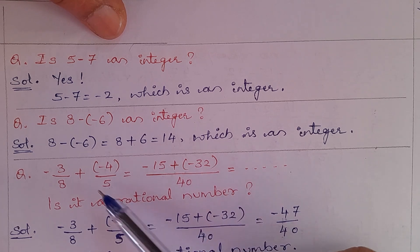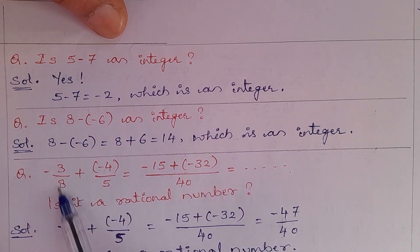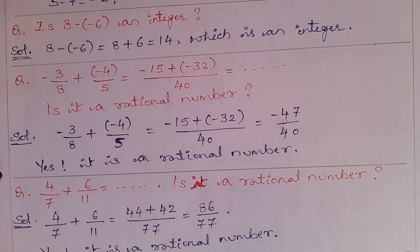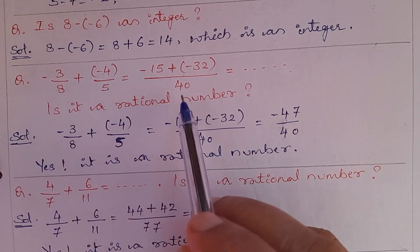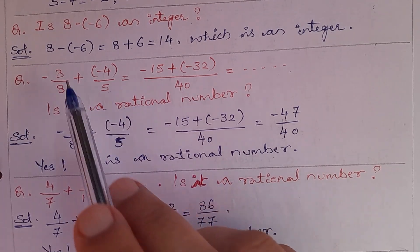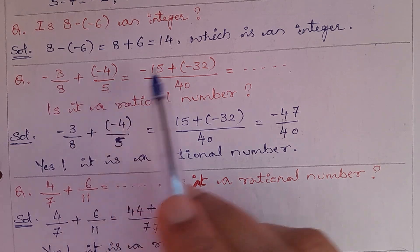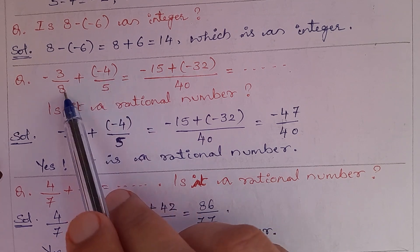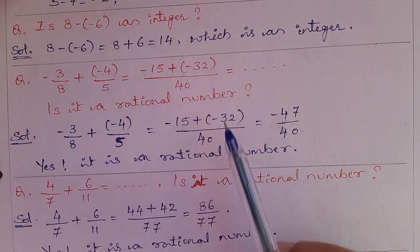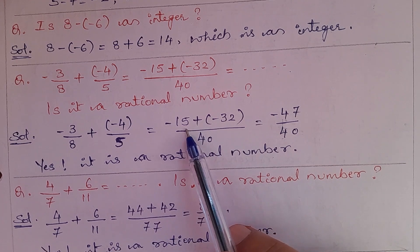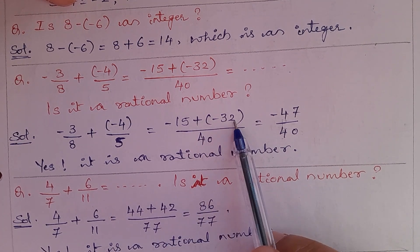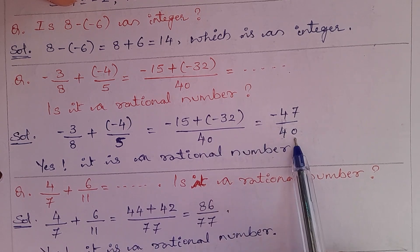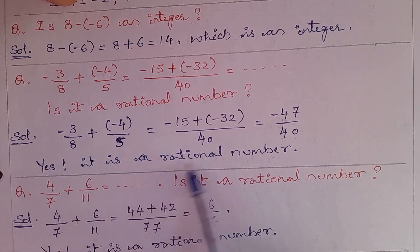Is it an integer? First, find the LCM of 8 and 5. LCM of 5 and 8 is 40. Then, using the butterfly method: (−3) × 5 = −15, plus (−4) × 8 = −32. Adding −15 and −32 gives −47. So the result is −47/40, which is a rational number.